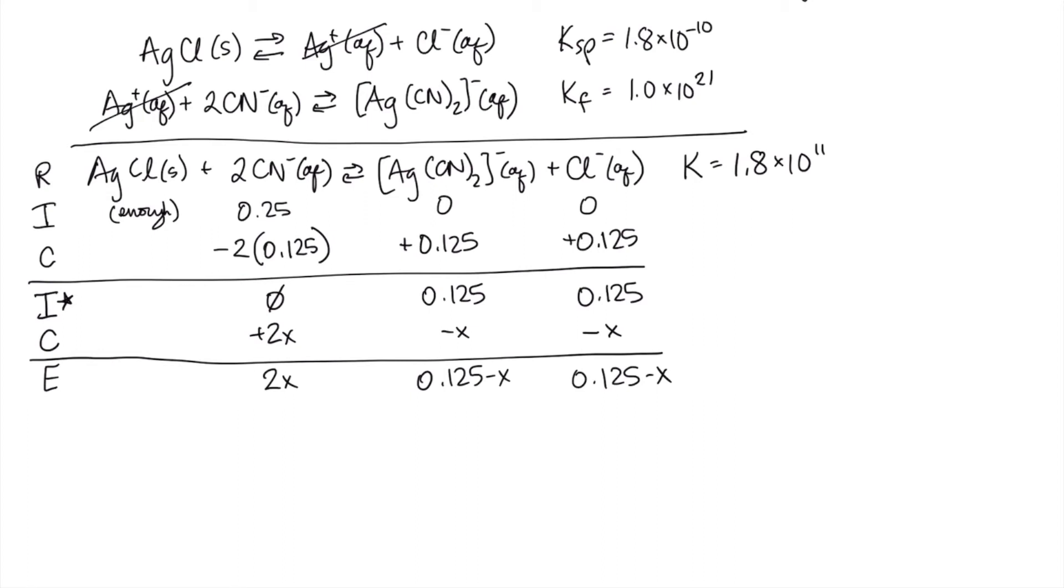So I end up with a situation where I've got my K, 1.8 times 10 to the 11th for the overall reaction. And if I write my expression, 1.8 times 10 to the 11th, it's going to equal my concentration of Ag(CN)2 minus, times my concentration of Cl minus, divided by my concentration of cyanide squared. So if I substitute everything in, I'm going to get 0.125 minus x squared on the top, and on the bottom, 2x squared. And that's kind of convenient, because actually now, because they're both squared, I can take the square root of both sides and simplify this expression.